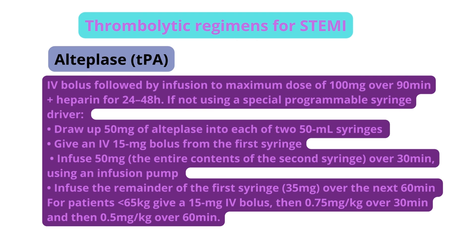Alteplase: IV bolus followed by infusion to a maximum dose of 100 mg over 90 minutes, plus heparin for 24–48 hours. If not using a special programmable syringe driver, draw up 50 mg of Alteplase into each of two 250 ml syringes. Give an IV 15 mg bolus from the first syringe. Infuse 50 mg (the entire contents of the second syringe) over 30 minutes using an infusion pump. Infuse the remainder of the first syringe (35 mg) over the next 60 minutes. For patients less than 65 kg: give a 15 mg bolus, then 0.75 mg/kg over 30 minutes, then 0.5 mg/kg over 60 minutes.